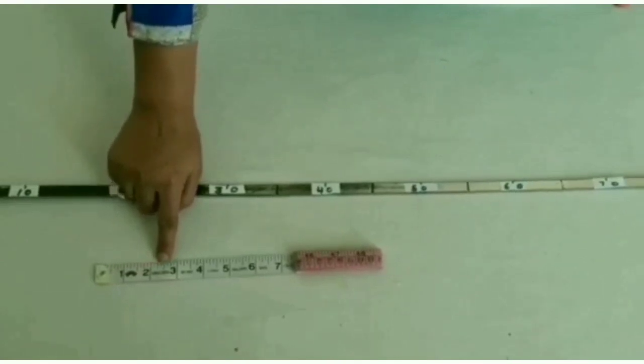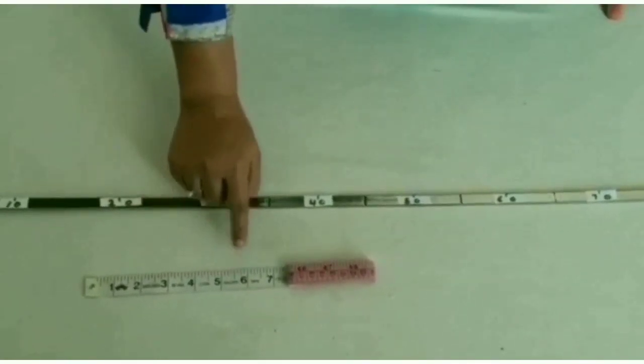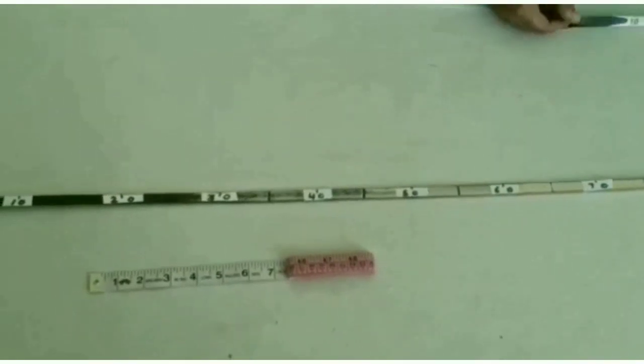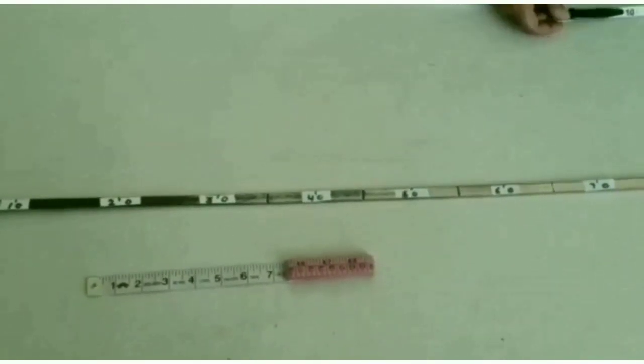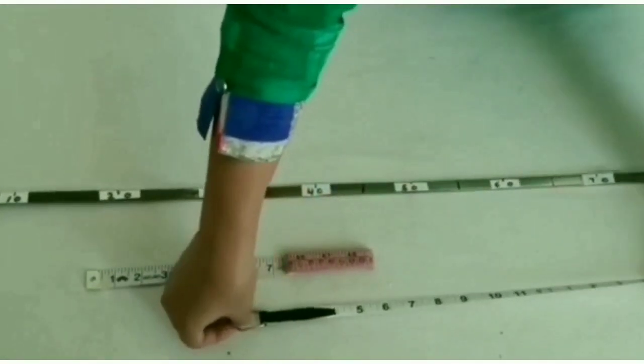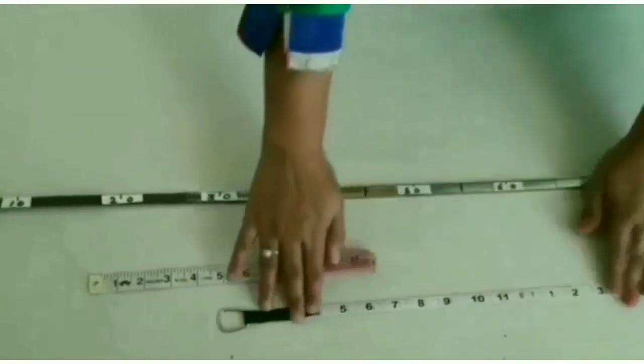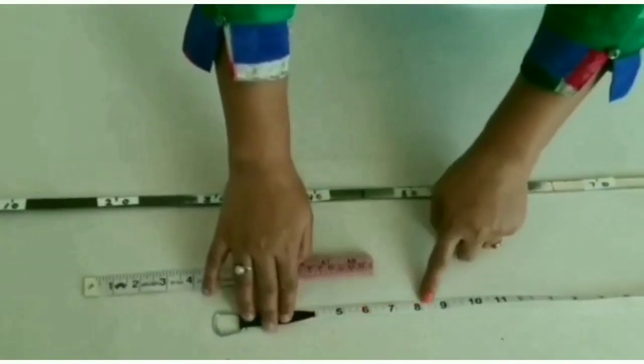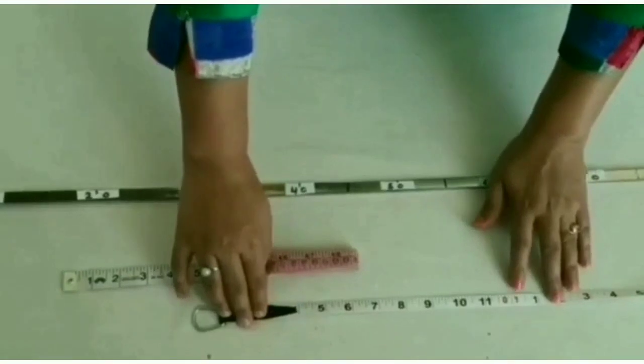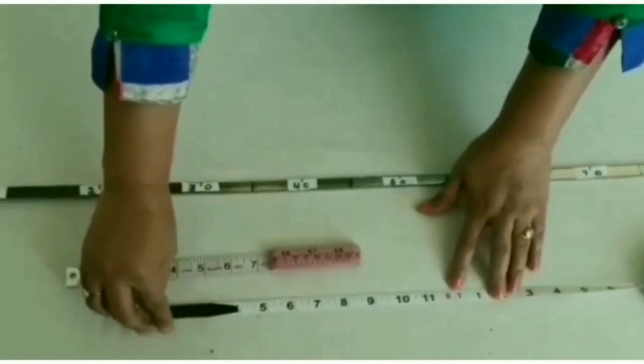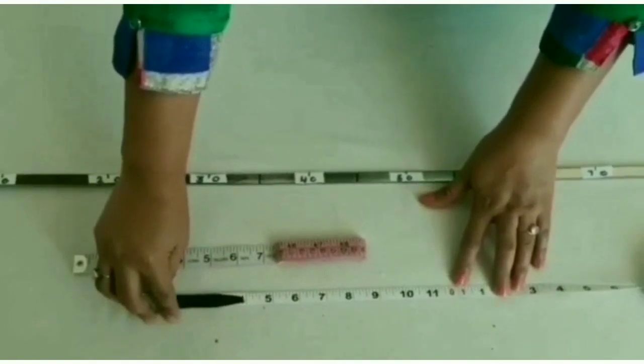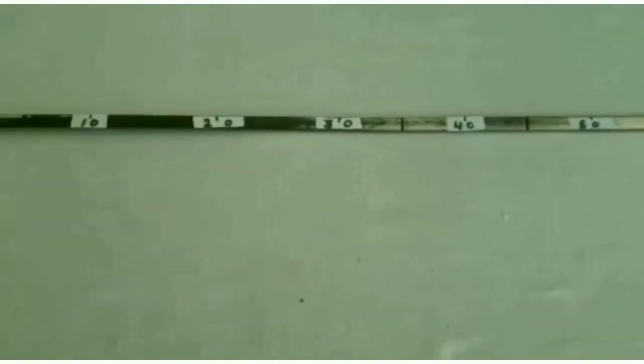Now see the numbers written in black on the inch tape. These numbers represent inches. In the similar way, the mason uses measuring tape and the numbers 1, 2, 3, 4, 5, 6, 7, 8, 9 etc. represent inches. One is written after eleven. This one means foot. It means one foot equals to twelve inches.